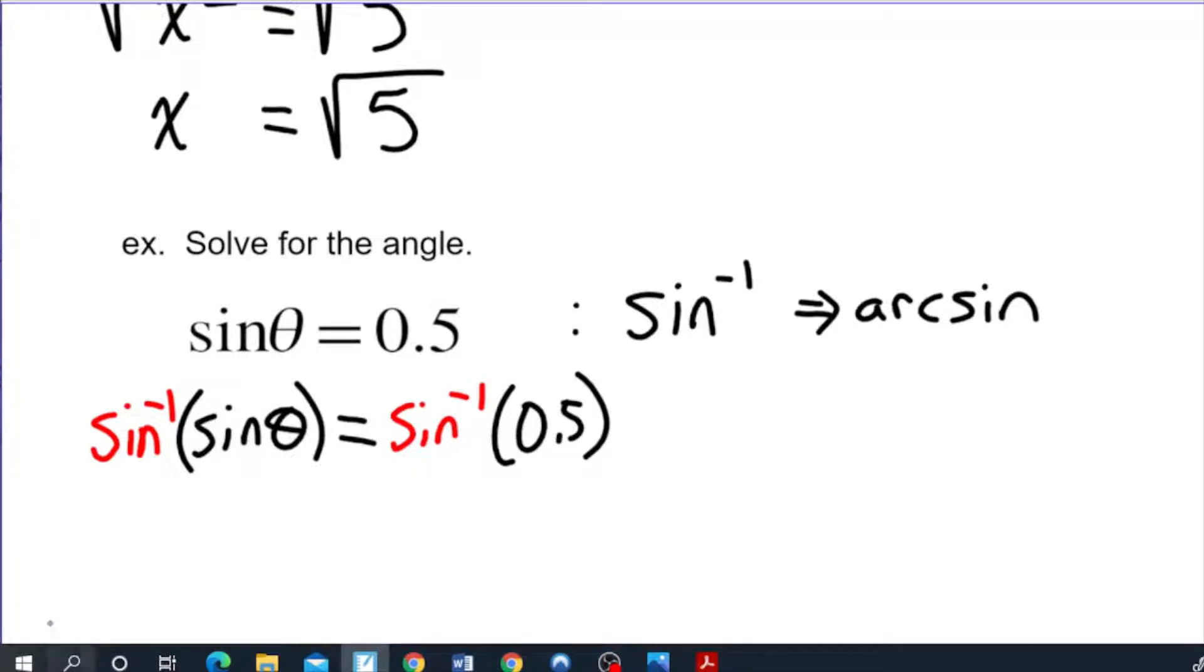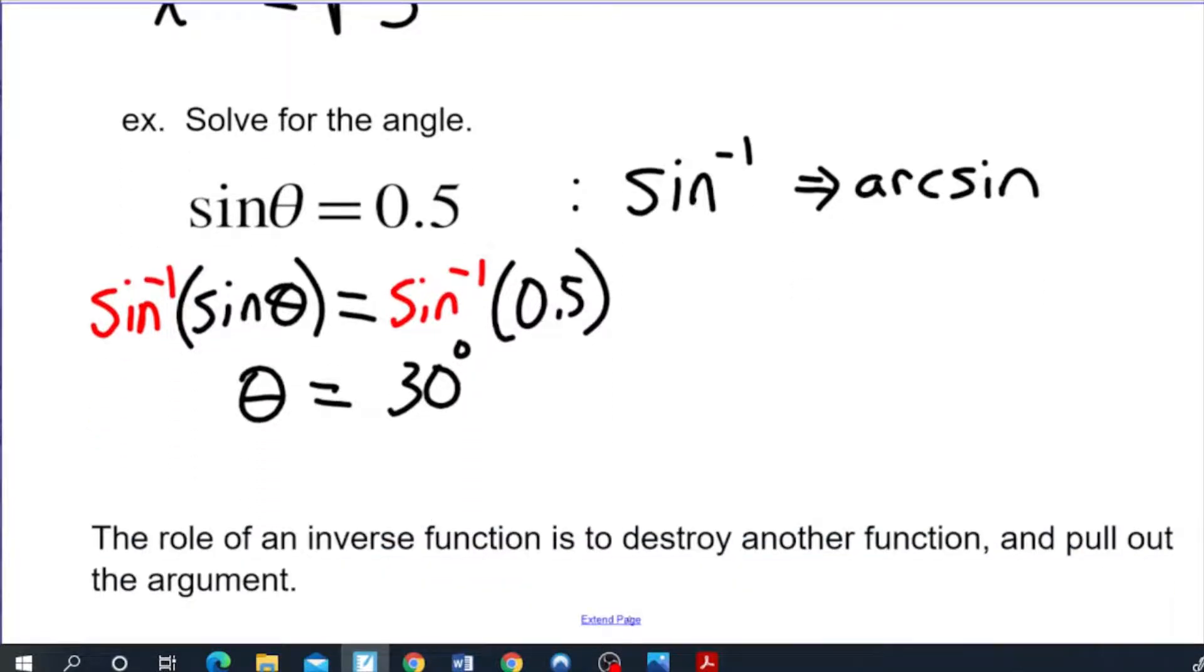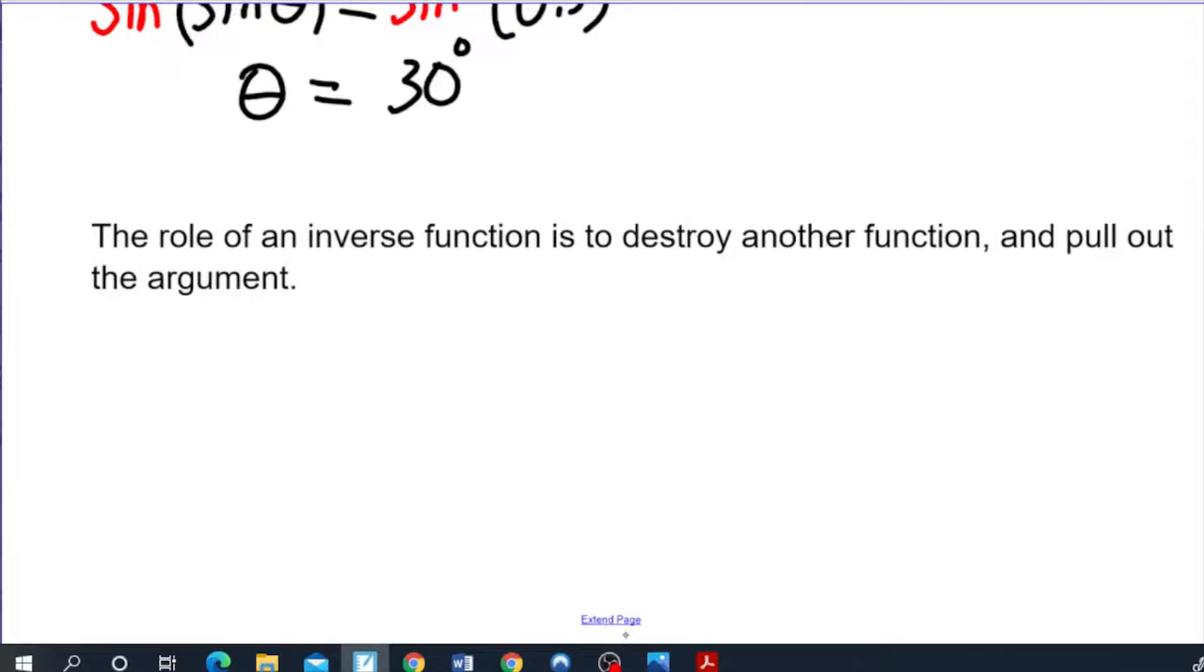On the left hand side here the arc sine destroys the sine, pulls out the argument. The argument in this case is the theta that is trapped inside the sine. All you are left with on that side is the theta and on this side if you arc sine this on a calculator you'd end up with your answer of 30 degrees. Arc cos and arc tan are also inverse functions. Their jobs are to get rid of the cos and the tan to be able to isolate a variable that's stuck inside them and that brings me to the sentence here at the bottom of the slide. The role of an inverse function is to destroy another function and pull out the argument. So anytime you're working with something that is affecting x other than the plus, minus, dividing or multiplication scenario, if you have to isolate that variable you're going to need an inverse function to do that.